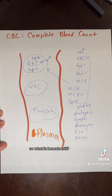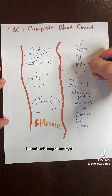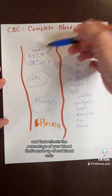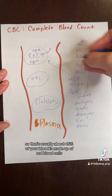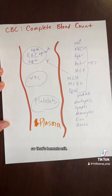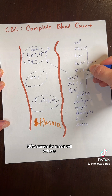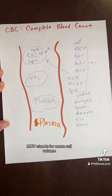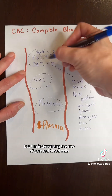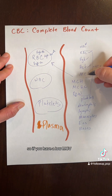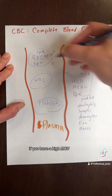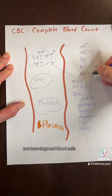Hematocrit is a percentage that reflects the percentage of your blood that's made up of red blood cells — usually about 45 percent. MCV stands for mean cell volume, also called mean corpuscular volume, and this describes the size of your red blood cells. A low MCV means small red blood cells; a high MCV means large red blood cells.